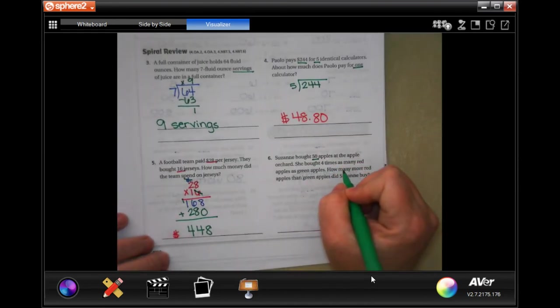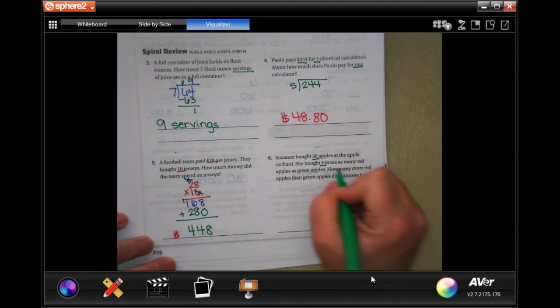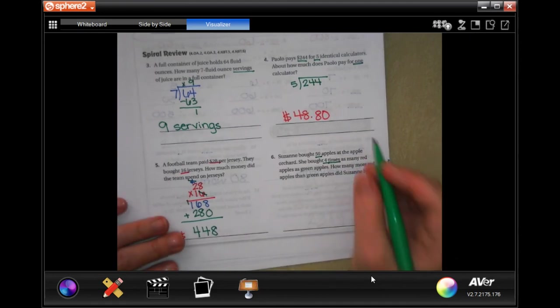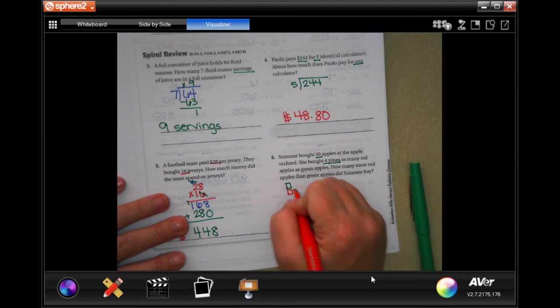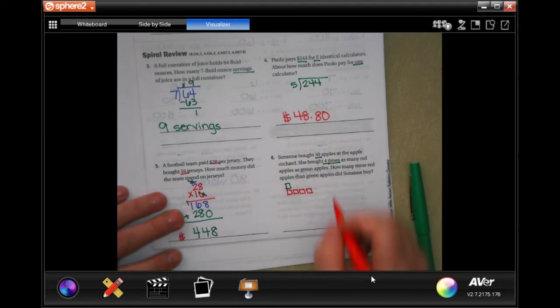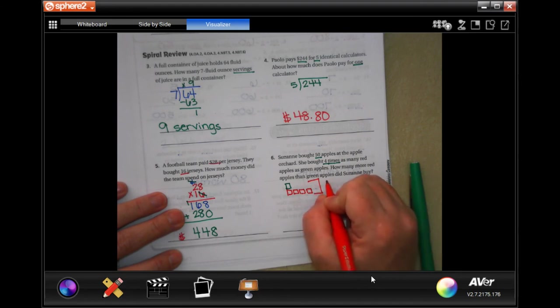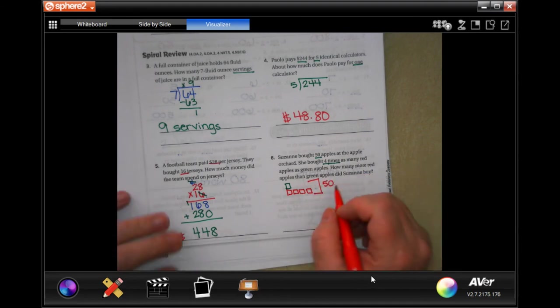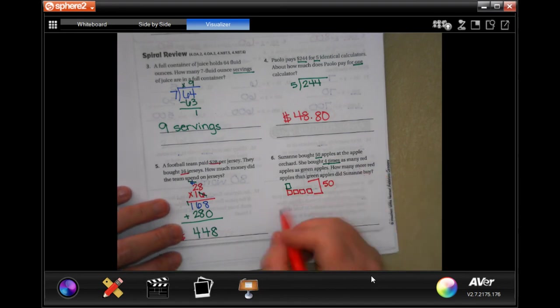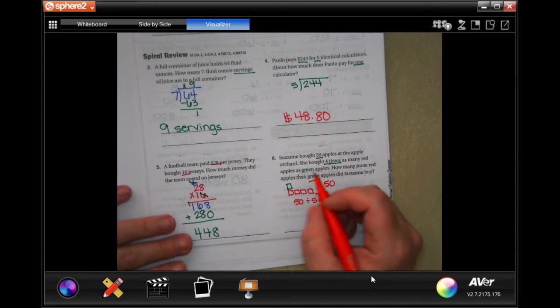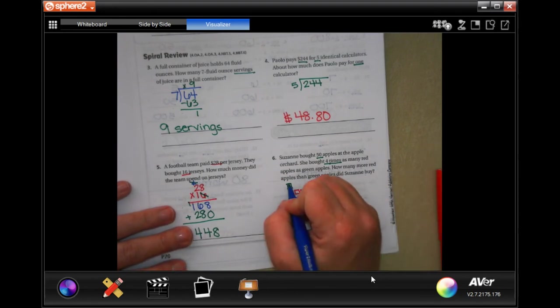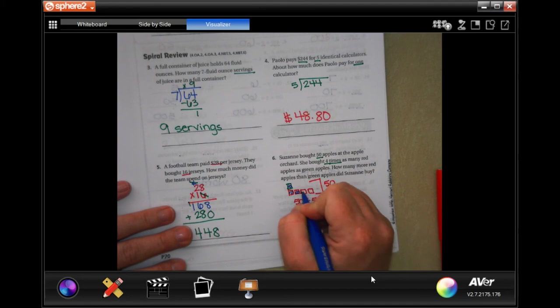Suzanne bought fifty apples at an apple orchard. She bought four times as many red apples as green apples. So if this is her green apples, then she bought four times as many red apples. And all together she bought fifty apples. So now we need to take that fifty and we're going to divide it by the number of boxes we have, one two three four five boxes. Well fifty divided by five is going to be ten. So that means that each one of these boxes is worth ten.